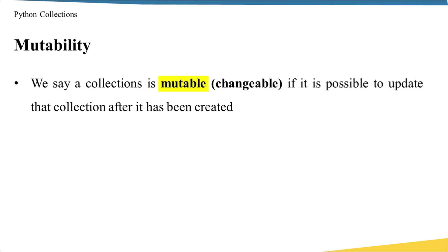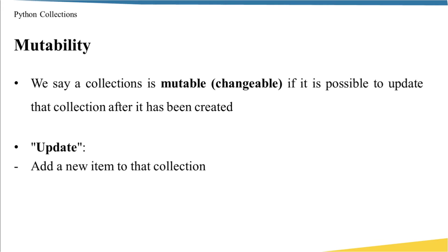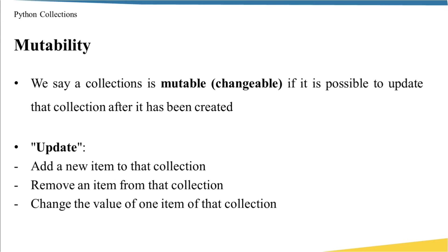Secondly, let's talk about mutability. We say a collection is mutable — in other words, changeable — if it is possible to update this collection after it has been created. Ask yourself: am I able to change the content of this collection after I create it? If yes, then it is mutable. We can update a collection in different ways: adding a new element, removing an item, or changing the value of an existing item. If a collection supports any one of these operations, we say it is mutable.